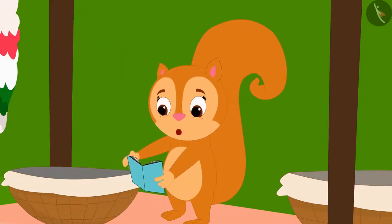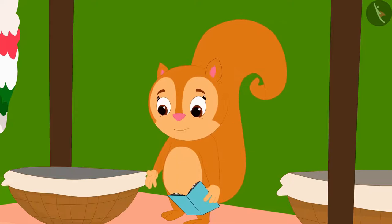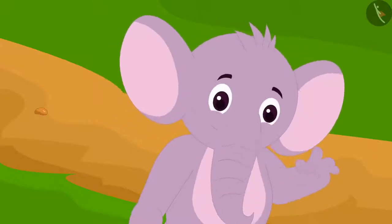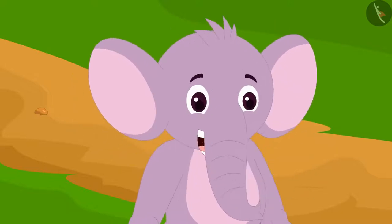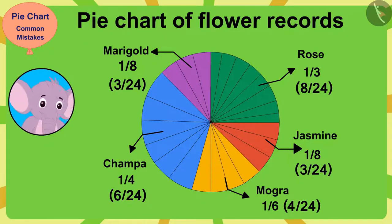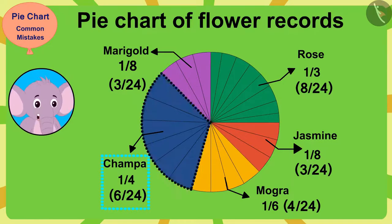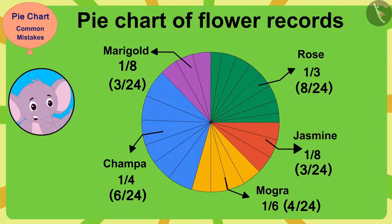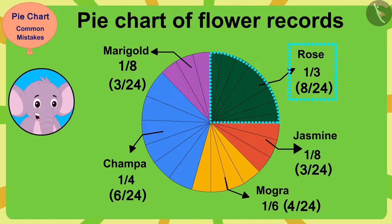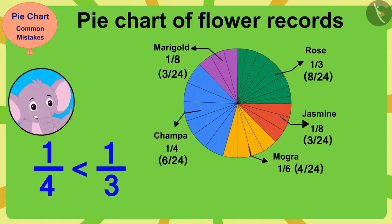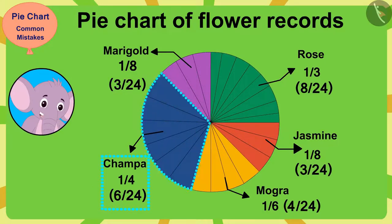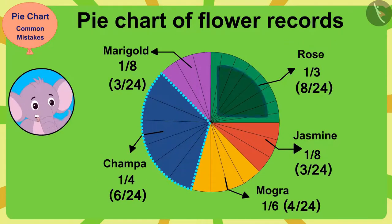See, I have also learned to make pie charts! Oh wow, Chanda, you have made a very beautiful pie chart. But, what's this? Champa flowers have been used in 1/4th of orders, and rose flowers have been used in 1/3rd of orders. And 1/4th is smaller than 1/3rd. But in your pie chart, the 1/4th part of the Champa flowers appears larger than the 1/3rd part of the rose flowers.